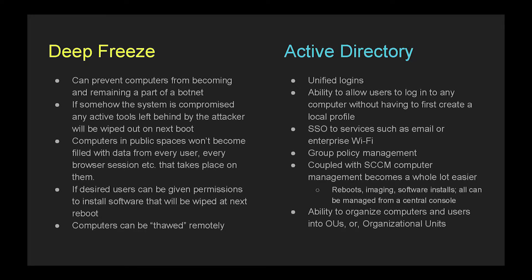Deep Freeze can prevent computers from remaining part of a botnet if they get infected. Same thing with viruses — if you get a virus, restart the computer, it wipes out anything. If the system is compromised and active tools are left behind, after a restart they're gone. Computers in public spaces can be secured so that user files, information, and login credentials are wiped out at the next restart. This is great for public spaces such as labs within a university. If desired, you can give users local admin — they can install software, but upon restart it's gone. Computers can also be thawed remotely, which is important for what we'll discuss later.